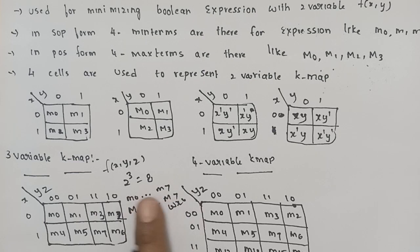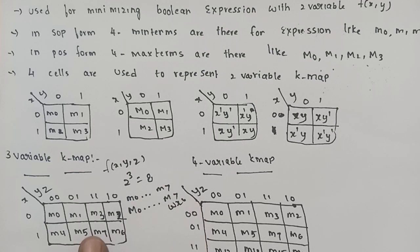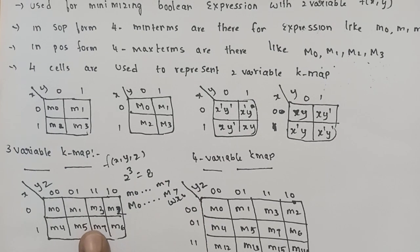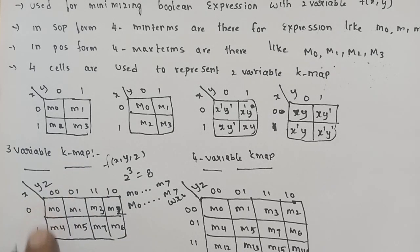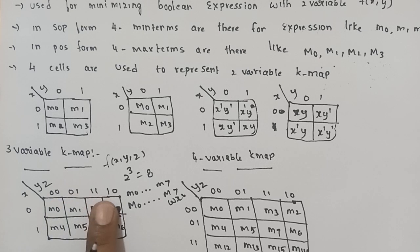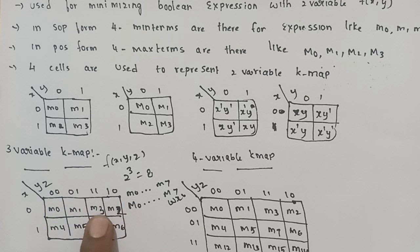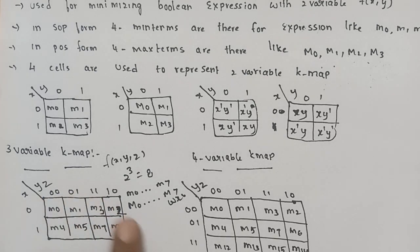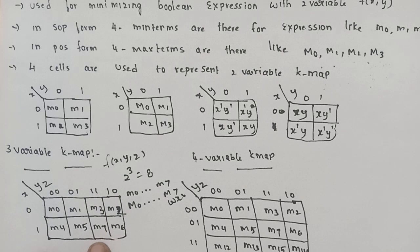In the three-variable K-map, eight min terms total — M0 to M7 — and eight max terms — capital M0 to capital M7. Eight cells are used with variables x, y, z. Y and Z take values 00, 01, 11, 10. Min terms are M0, M1, M2, M3, M4, M5, M6, M7 — total eight min terms for three variables in the K-map.